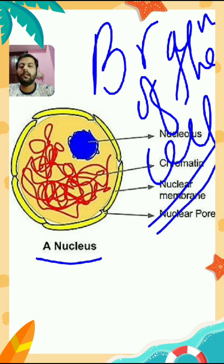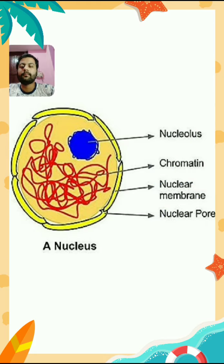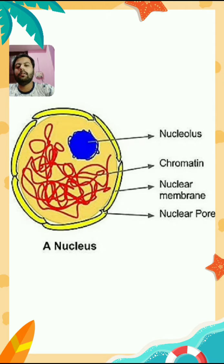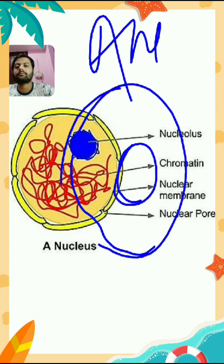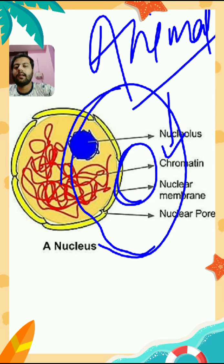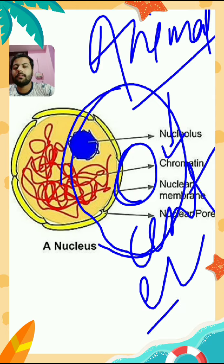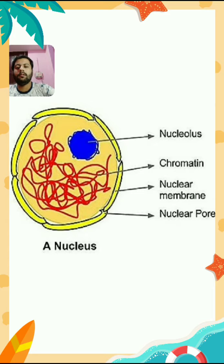That's why nucleus is known as the brain of the cell. Second point: what is the location of nucleus inside the cell? There are different locations where a nucleus is located in different cells. In animal cell, nucleus is located at the center.